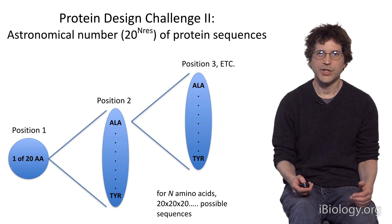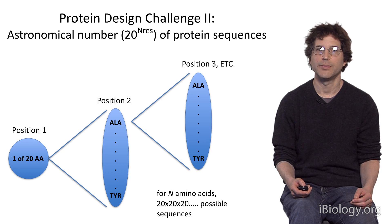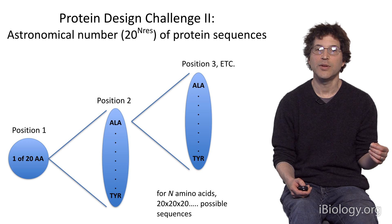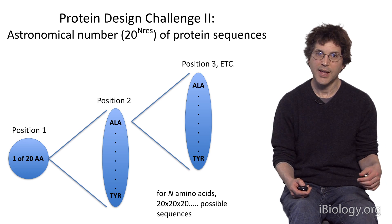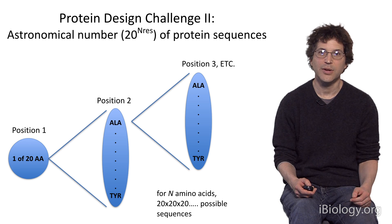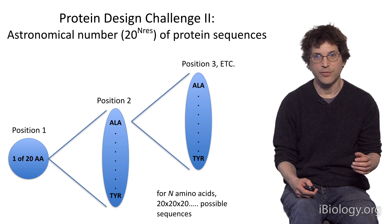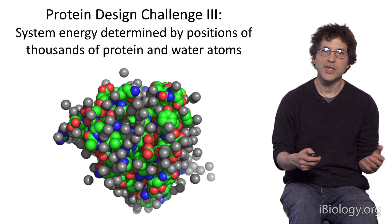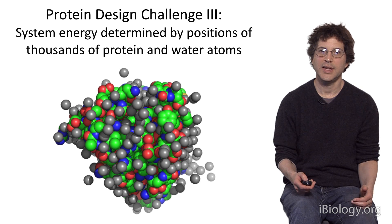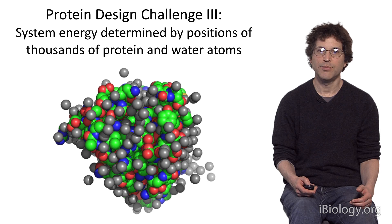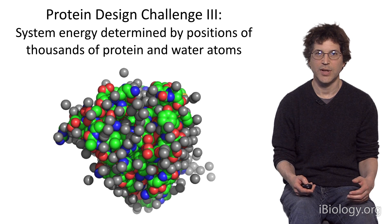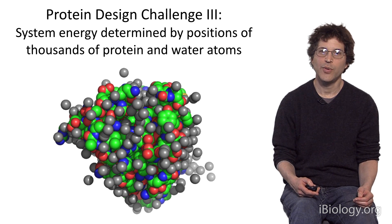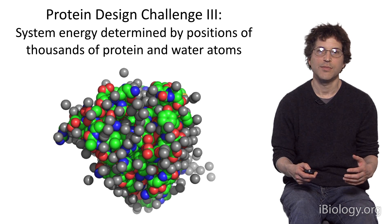The second reason that the design problem is hard is there's also an astronomical number of protein sequences. The first residue can be any one of the 20 different amino acids, and so can each subsequent position, so the number of possible sequences is 20 to the N_res power — again, a very large number. The third reason these are hard problems is that calculating energies is difficult to do accurately, because proteins have many, many atoms and they're surrounded by water molecules which also have many atoms. So, we need to calculate energies accurately for systems that have many thousands of atoms.